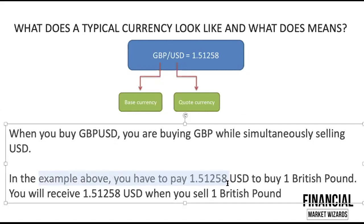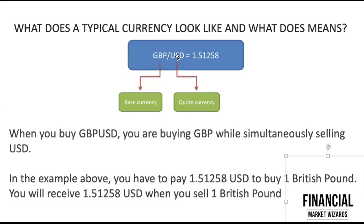How do you read this? If you buy, you have to pay 1.51258 USD to buy one British pound. So when you buy, it's always with reference to the base currency, which is one unit. To get one pound, you need to pay 1.51258. Conversely, if you want to sell one pound, you will receive 1.51258. That's how you read the quotes.